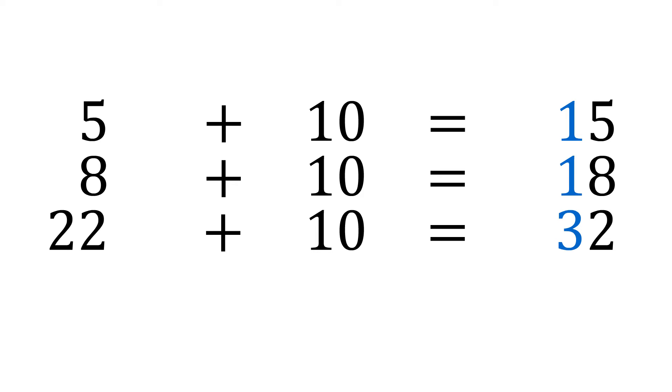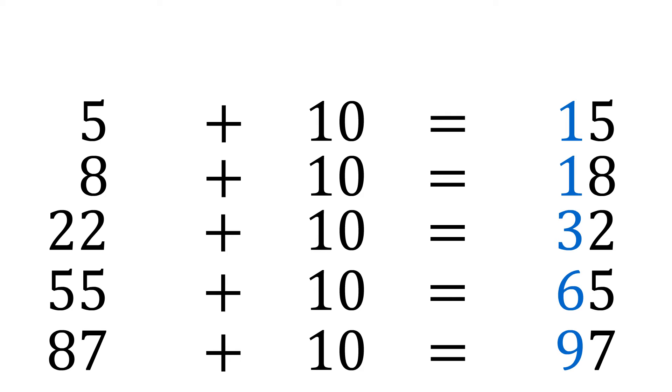Adding ten to a number is easy. Five plus ten is fifteen. Eight plus ten is eighteen. Twenty-two plus ten is thirty-two. Fifty-five plus ten is sixty-five. Eighty-seven plus ten is ninety-seven.